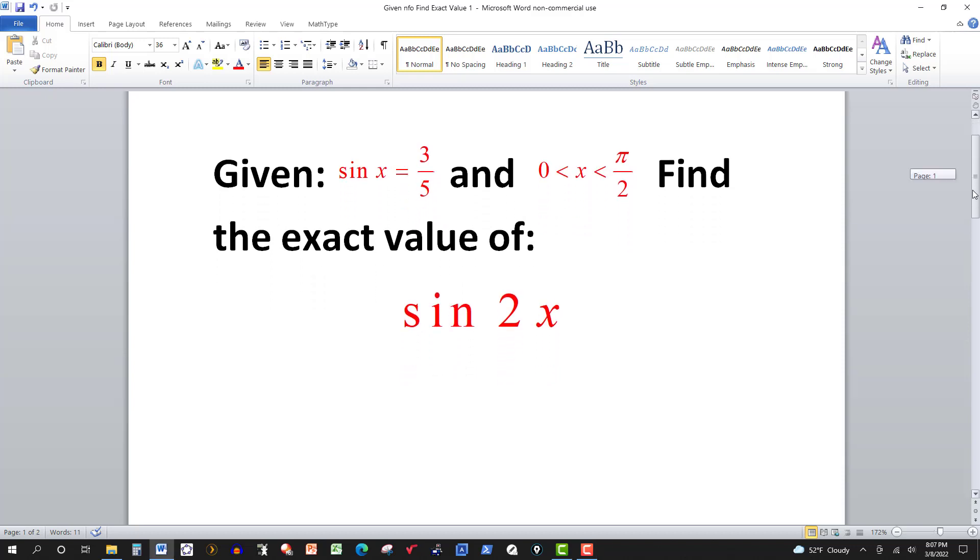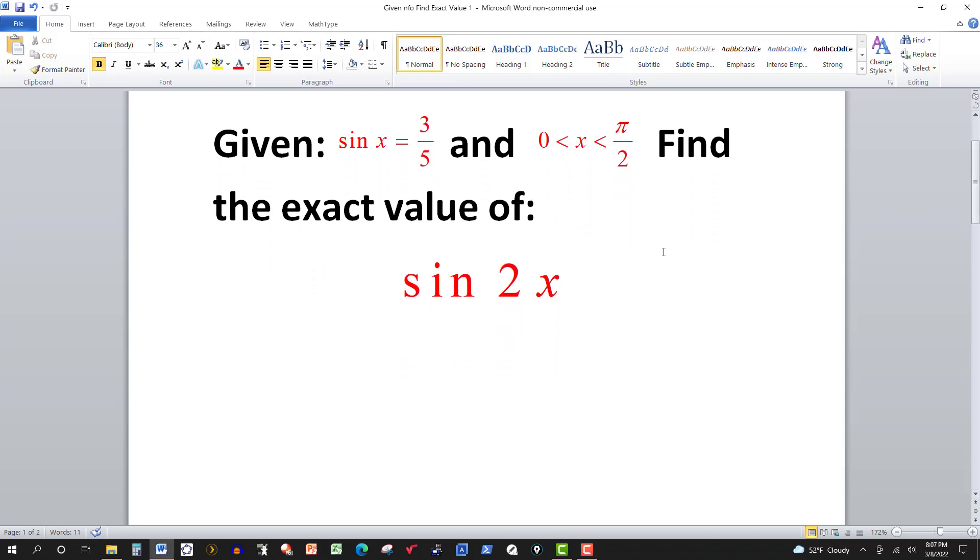So it looks like we want to use a double angle identity. We know that angle x is between zero and pi over two, so if we multiply that by two, then two x would fall between zero and pi.